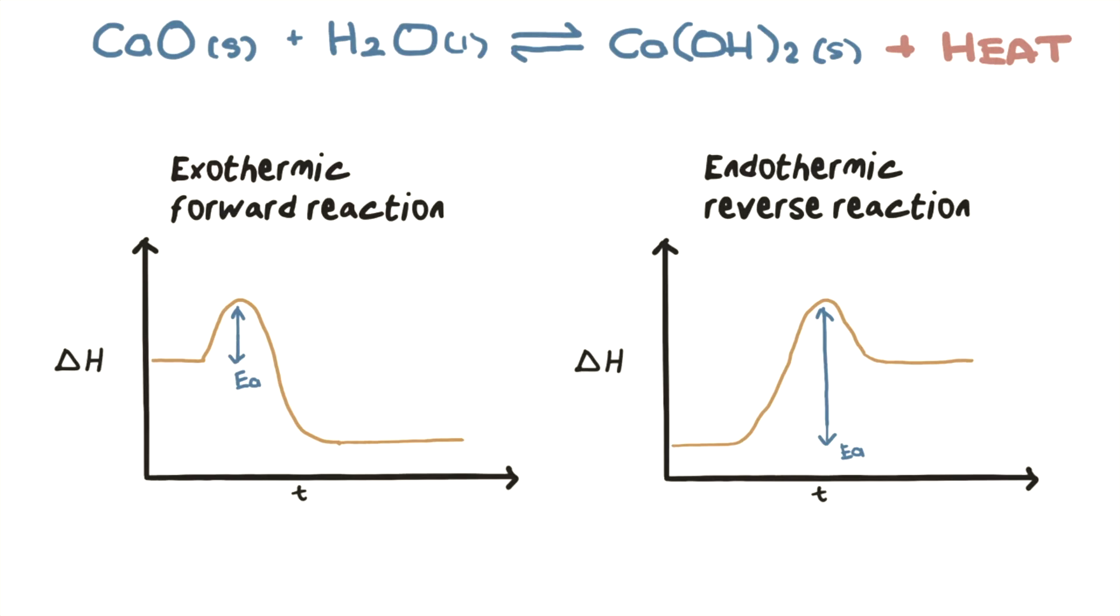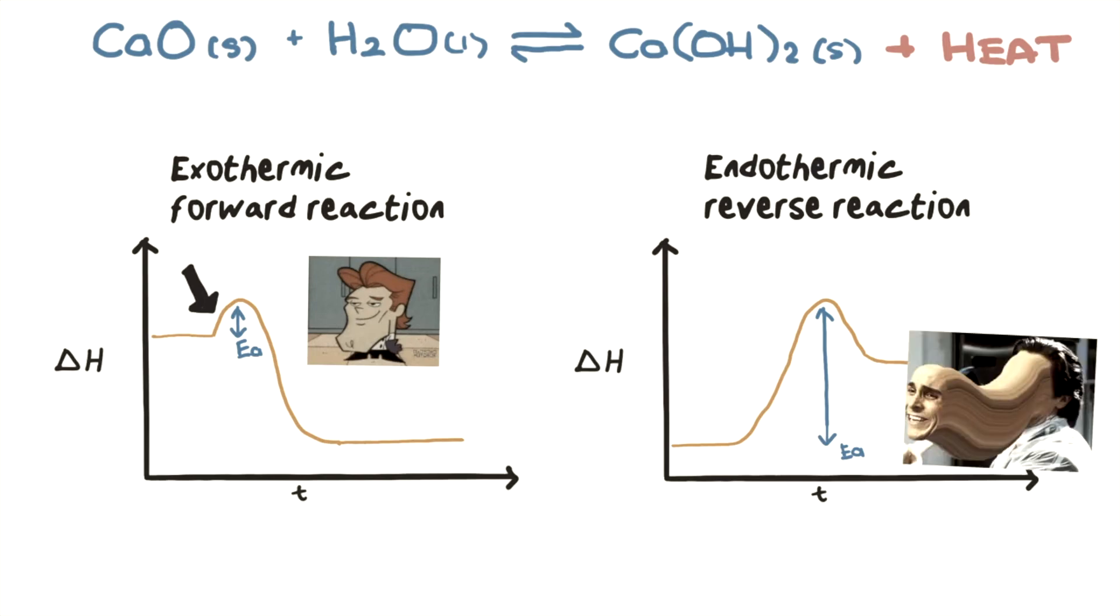Now if the forward exothermic reaction has a higher enthalpy, the activation energy is even lower. Check out that hump right there. It's now shorter. This means that the activation energy for the reverse endothermic reaction is comparatively much higher. See this hump? It's much larger.